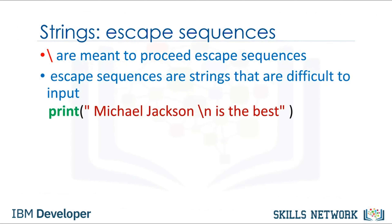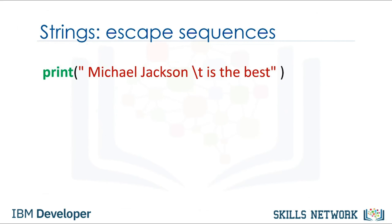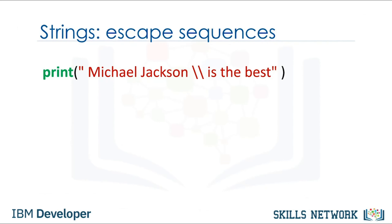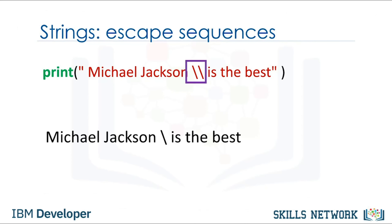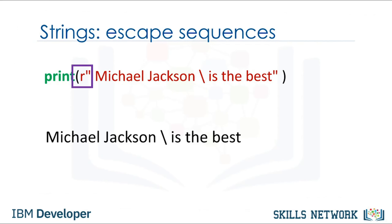Backslash N represents a new line — the output is given by a new line after the backslash N is encountered. Similarly, backslash T represents a tab. If you want to place a backslash in your string, use a double backslash — the result is a backslash after the escape sequence. We can also place an R in front of the string.